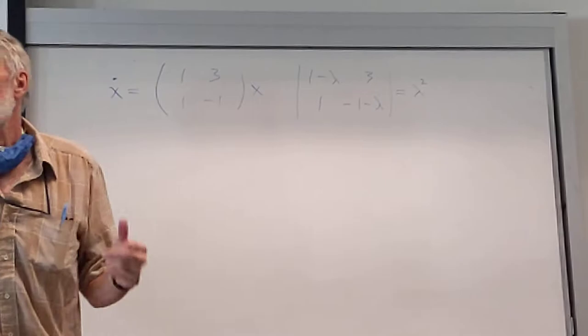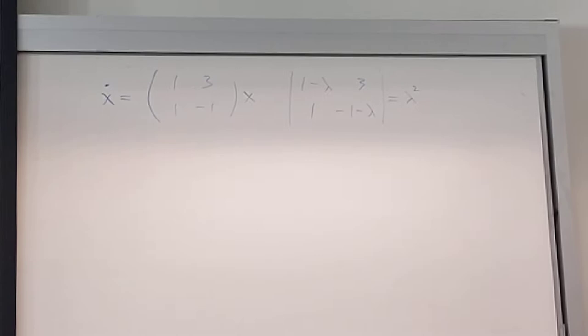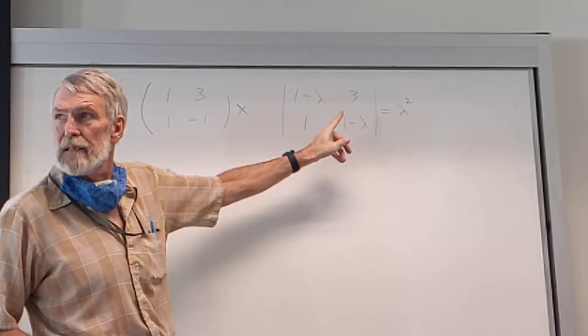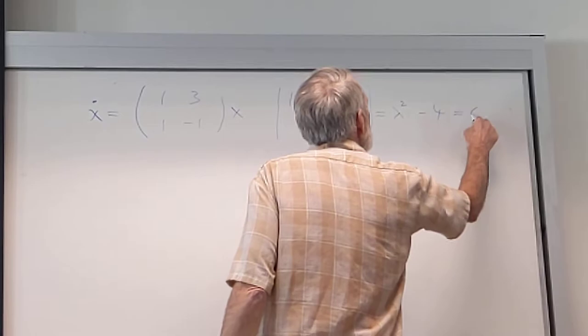Alright, what's the middle term? It's zero, because we have a plus and a minus 1, right? So we get no lambda. And down this diagonal we get a minus 1, and this direction subtracts 3. So we get minus 4.